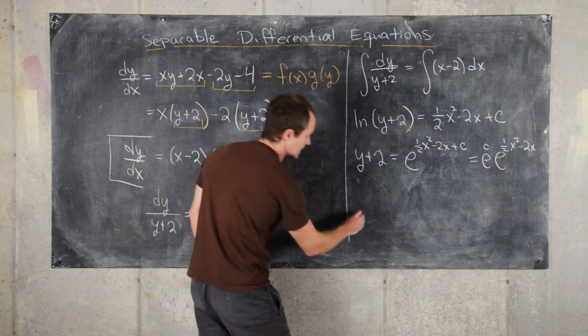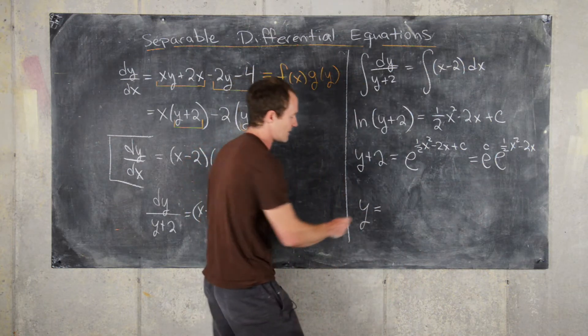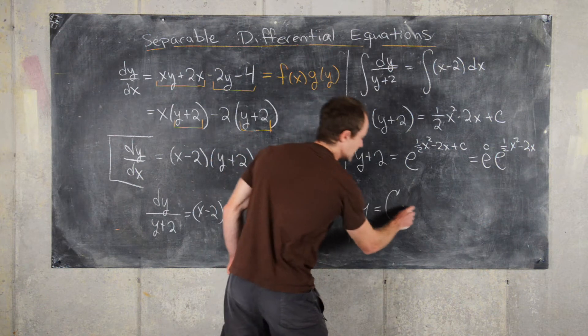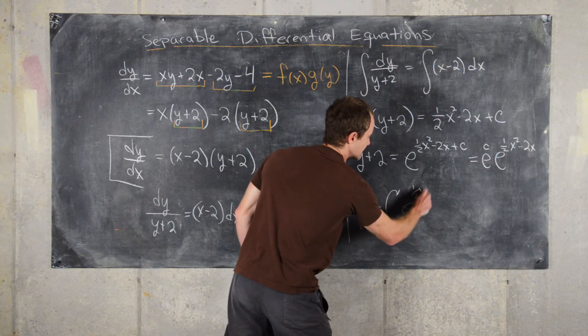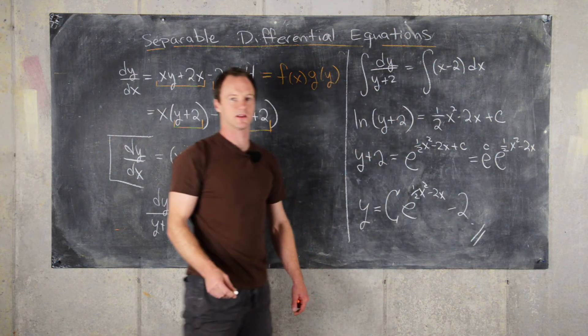Finally, we can write y equals - we can replace e to the c with a capital C, and then we have C times e to the (1/2 x squared minus 2x) minus 2. And that's our final answer.